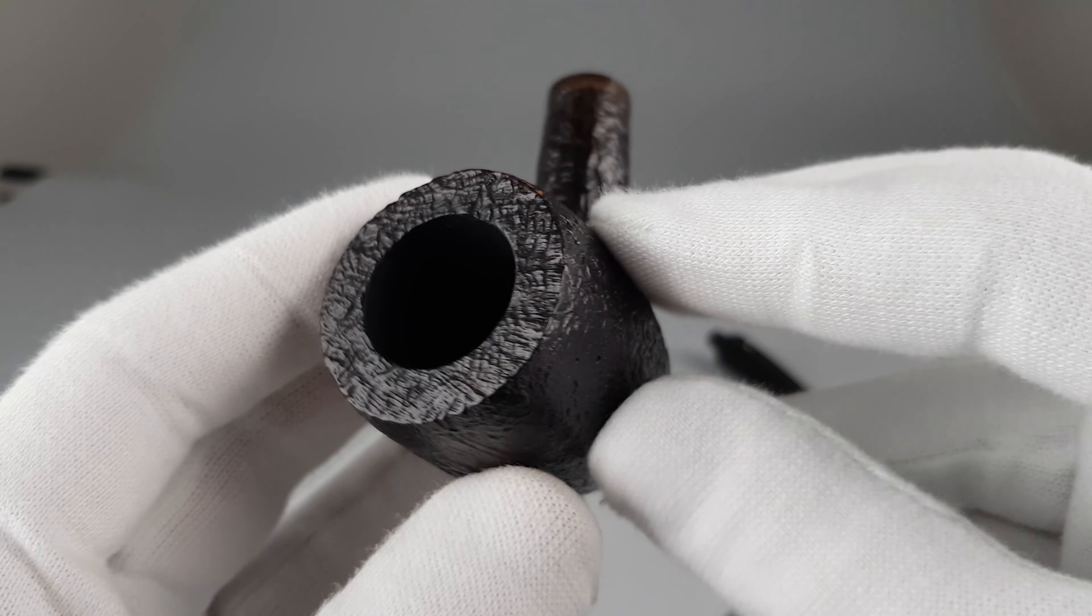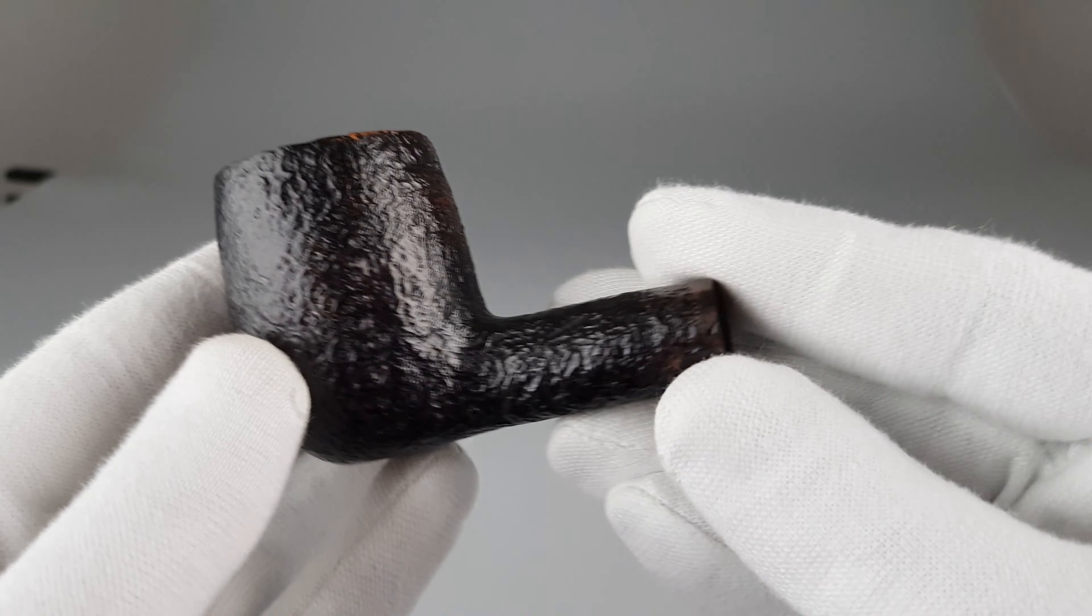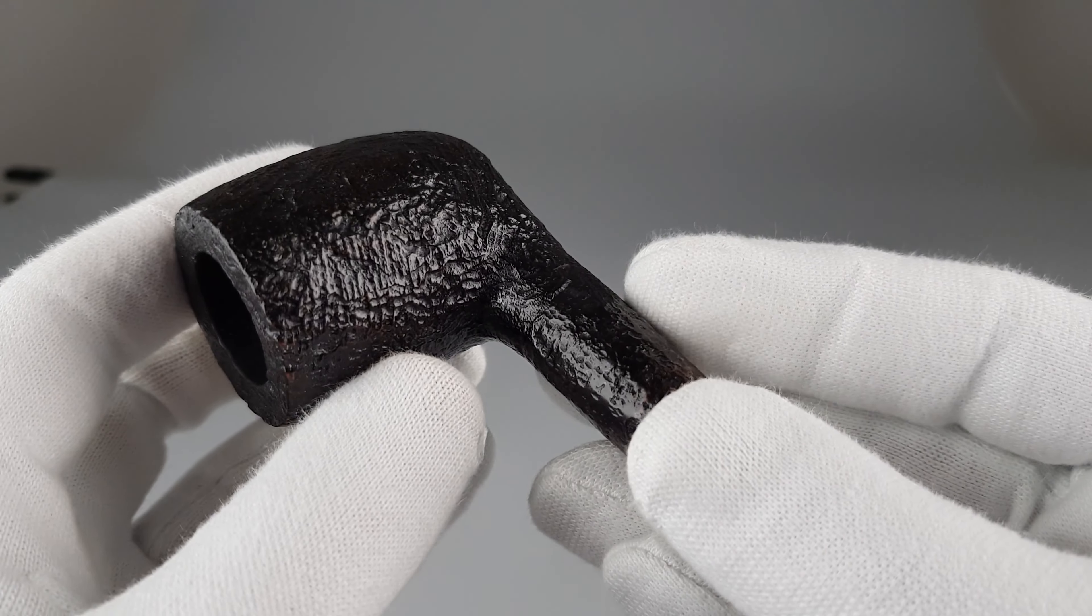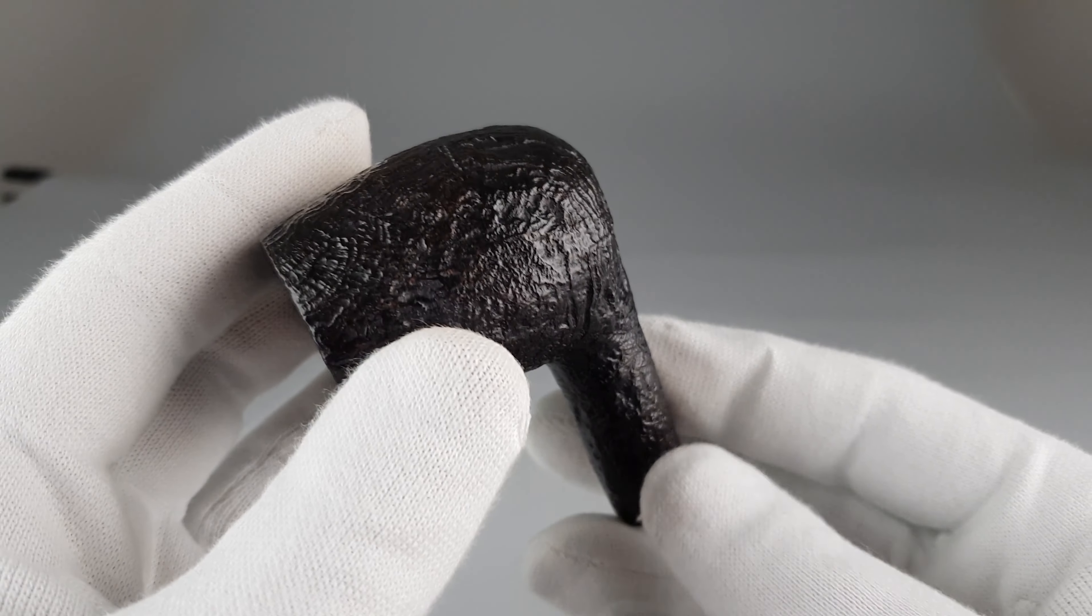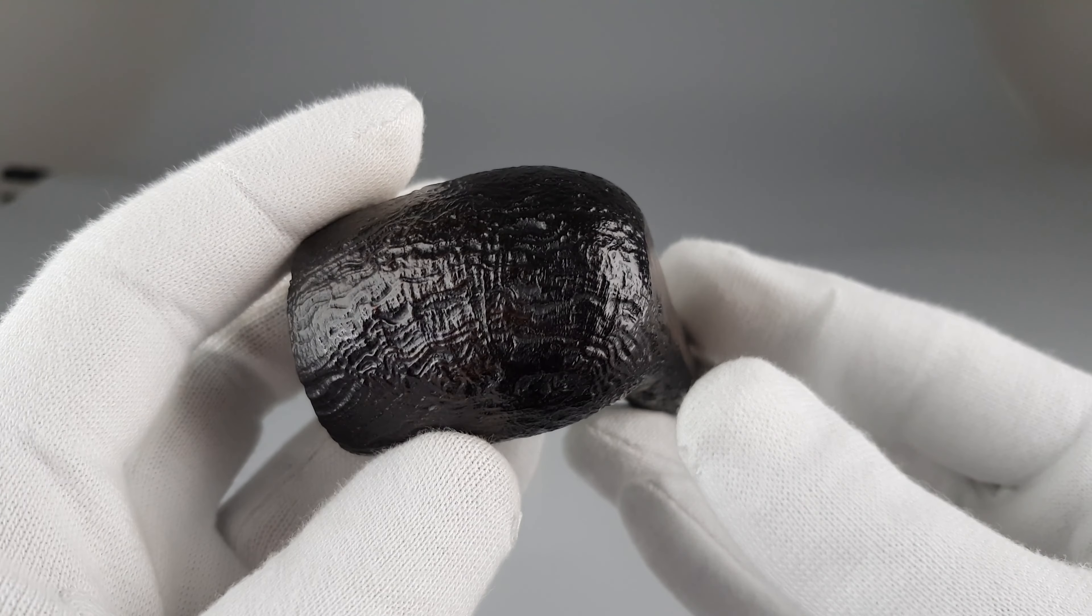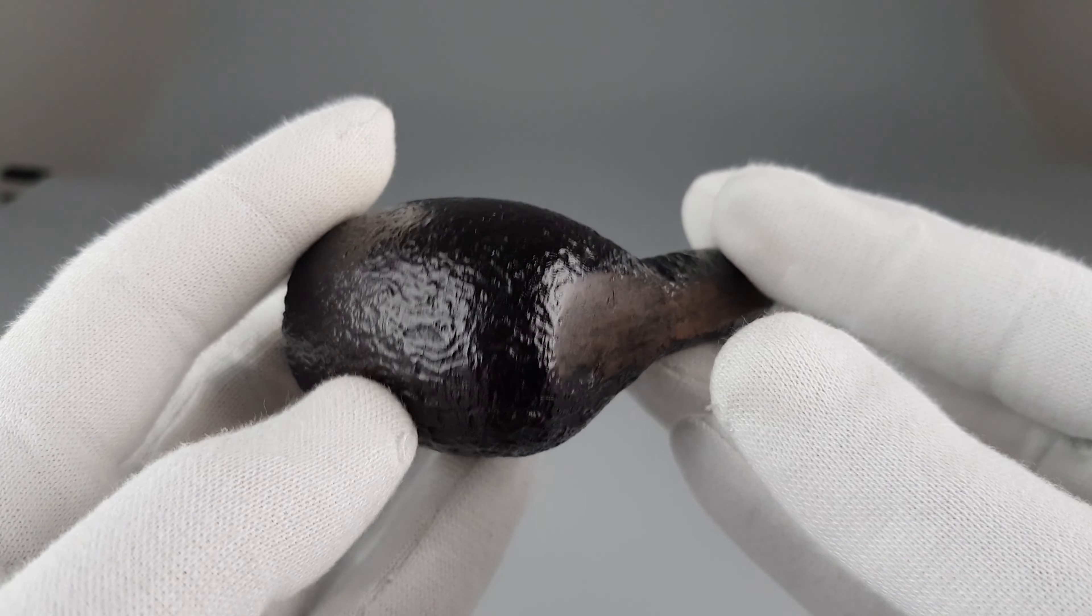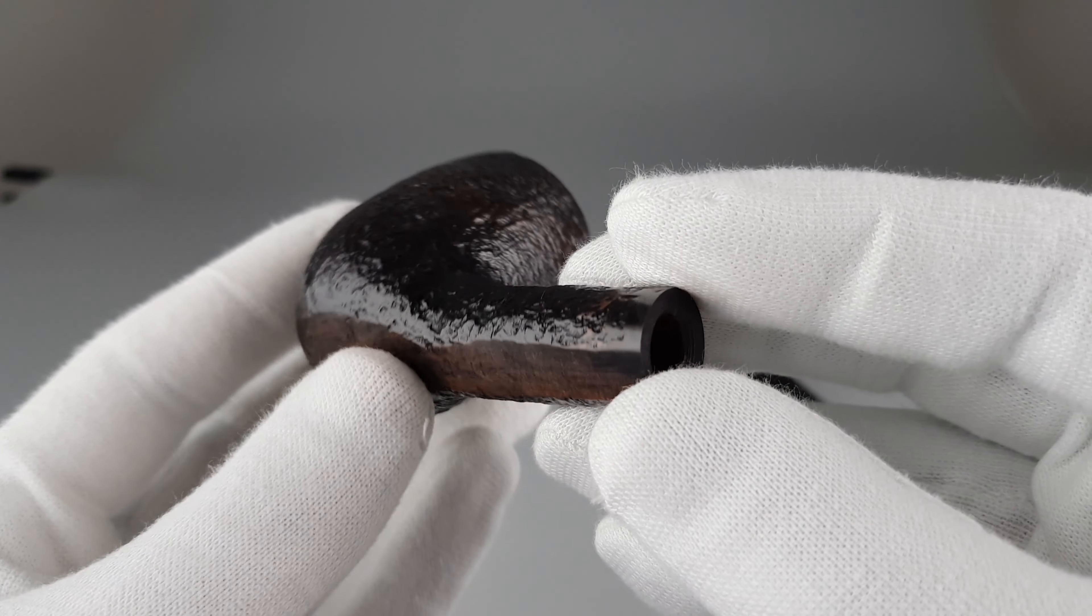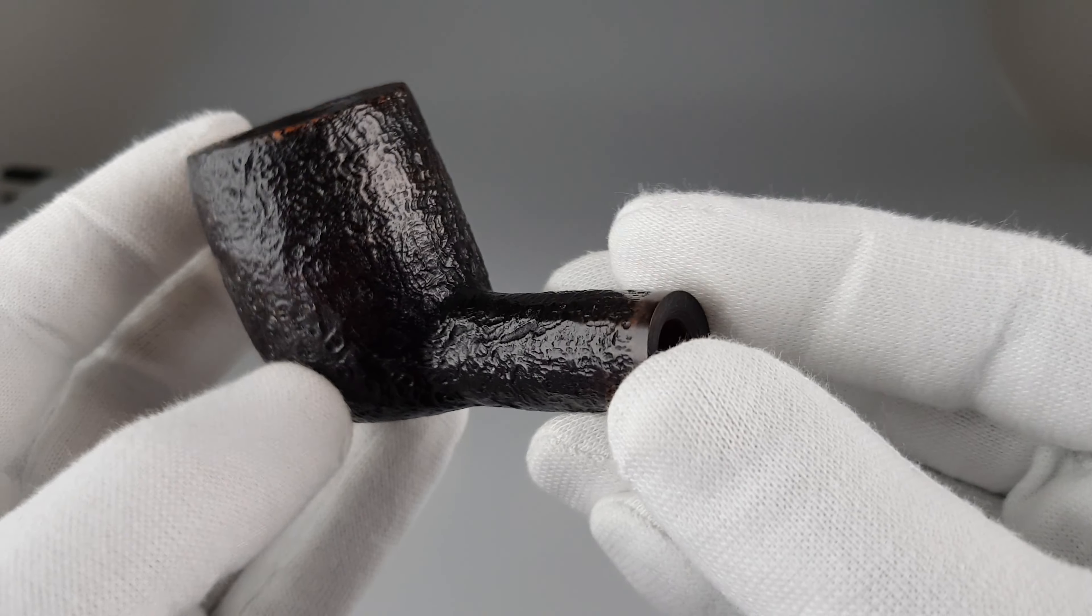Besides some lighter stain on a few places, as you can see it's a bit worn off, everything mostly matches the finish and the stain you would expect from a shell Dunhill. But for some reason, again, someone sanded down the bottom side.